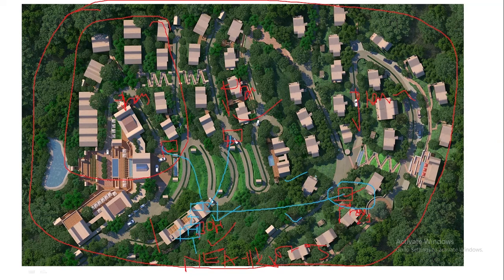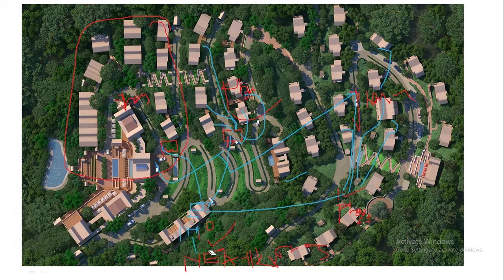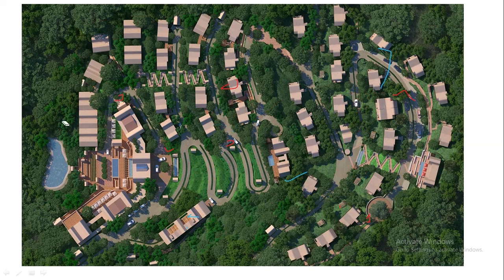We lay the cables underground from the LT panel to each phase SMDB. From each SMDB — for example phase one — we distribute power to each villa using 16 sq mm 4-core cable feeding to the main DB of each villa. In this way power is distributed. Similarly, power feeds to each villa of phase two from its SMDB. This is the basic concept of how power flows in residential housing or resorts.